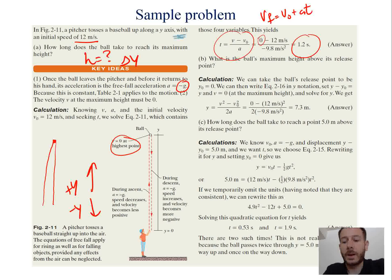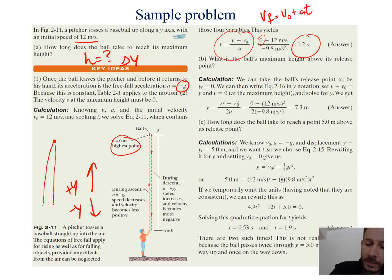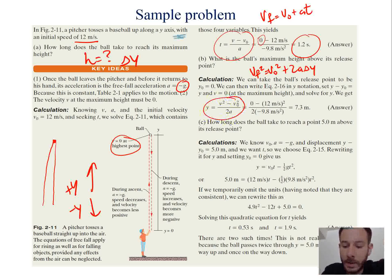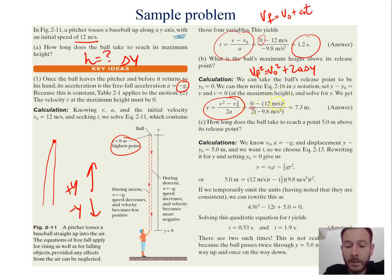Part B: what is the ball's maximum height after its release point? We're trying to find the y value. The equation we use is v_f squared equals v₀ squared plus 2a delta y. Rearranging to solve for delta y, we plug in: final velocity is 0 at the top, initial velocity is 12 meters per second squared, divided by 2 times negative 9.8 meters per second squared. We end up with 7.3 meters.